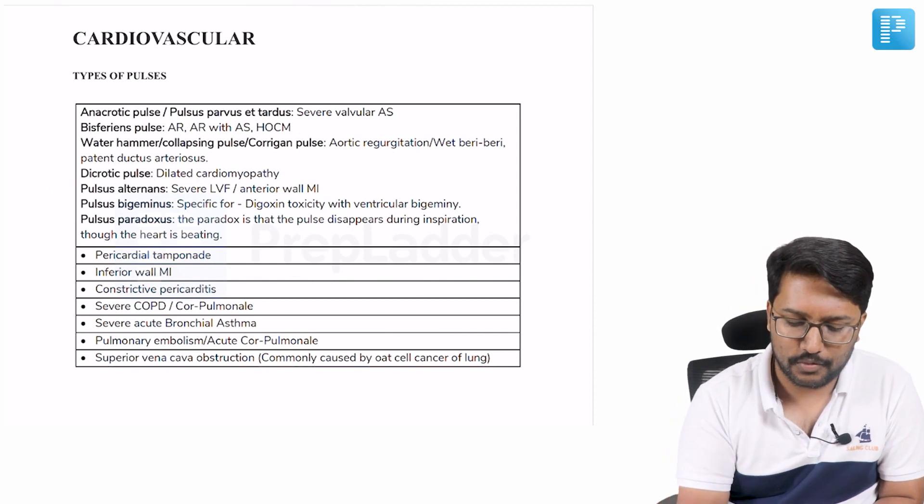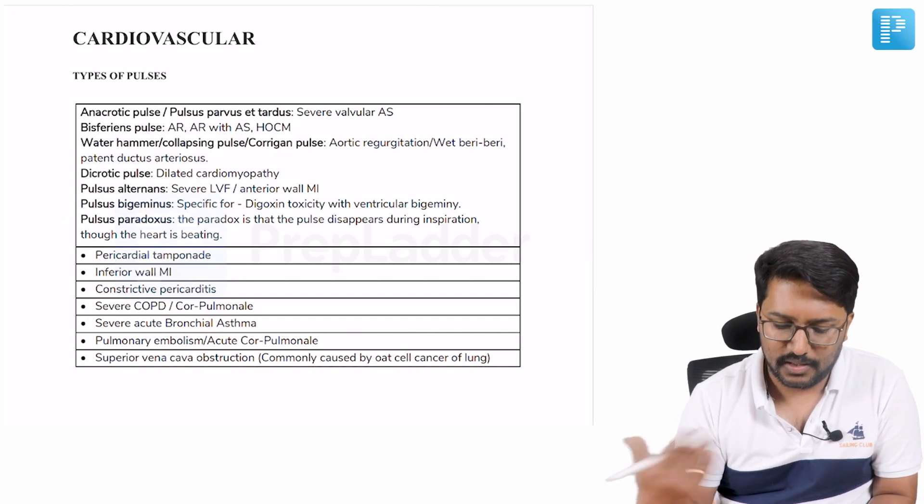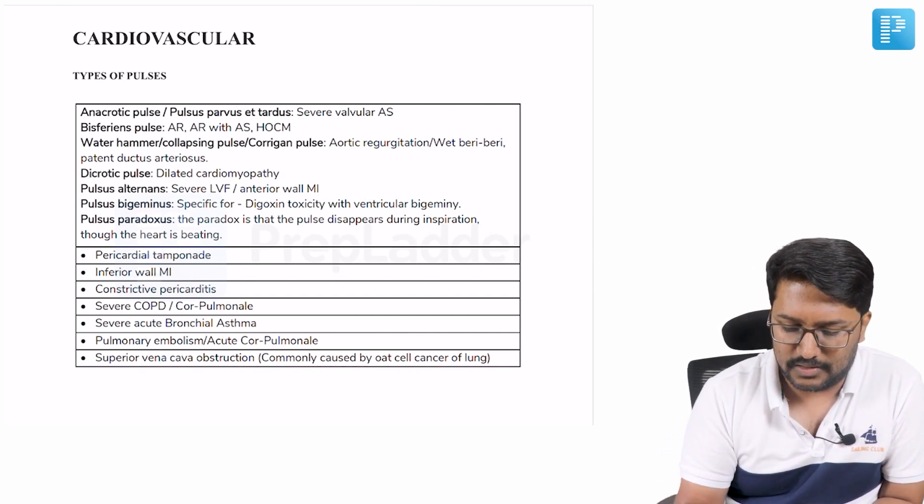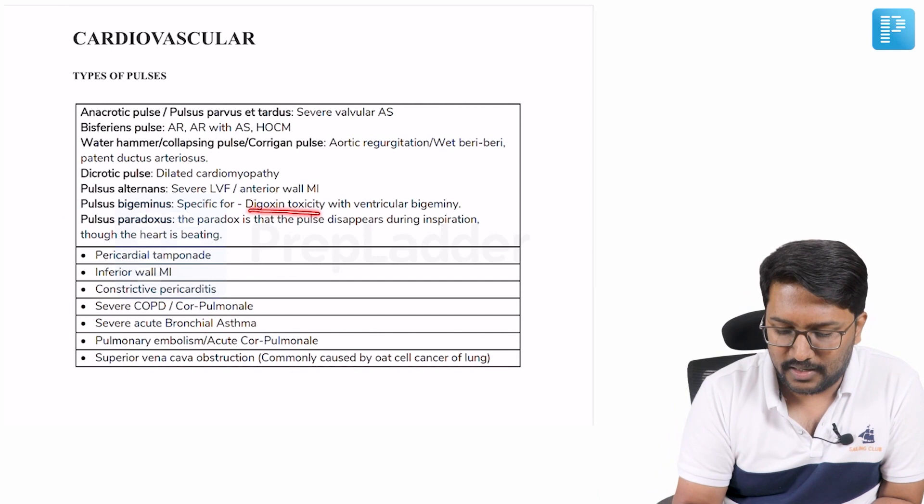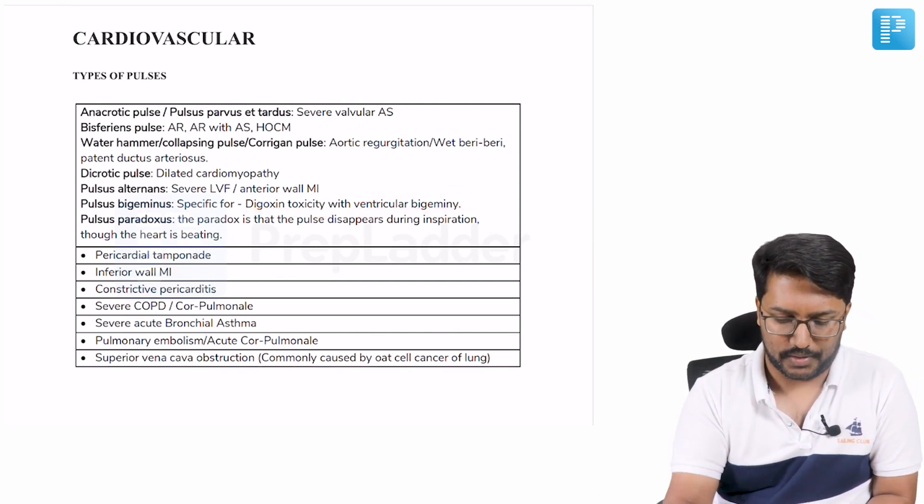One more MCQ point: pulsus bigeminus. Basically, bigeminy, ventricular bigeminy manifesting in bigeminus pulse. Where do we see that? Digoxin toxicity with ventricular bigeminy.